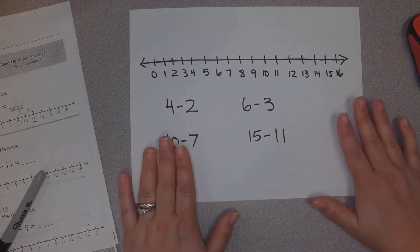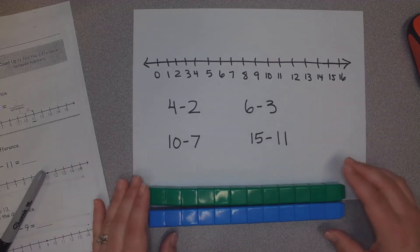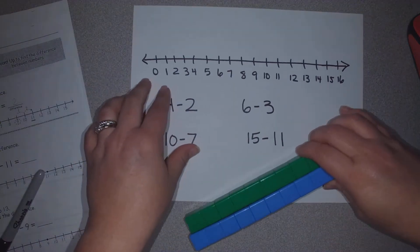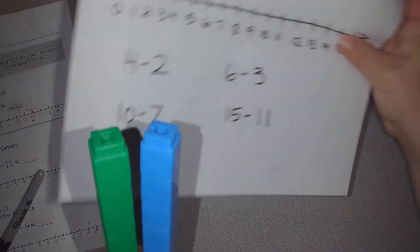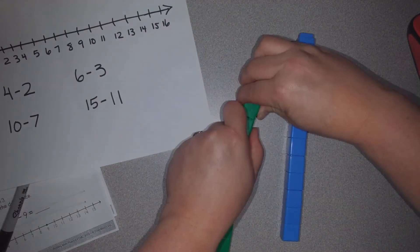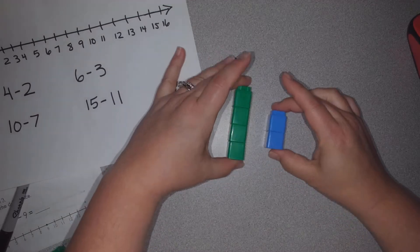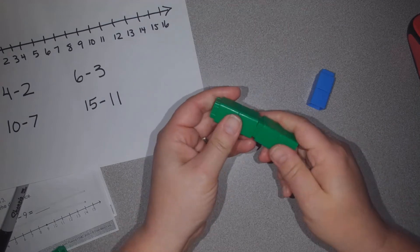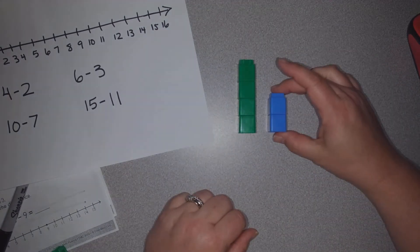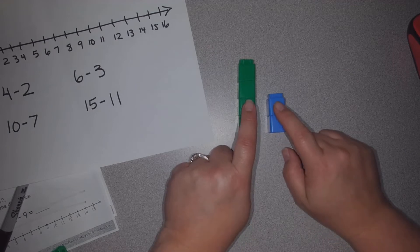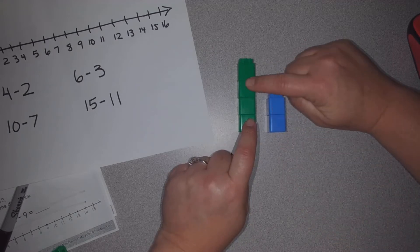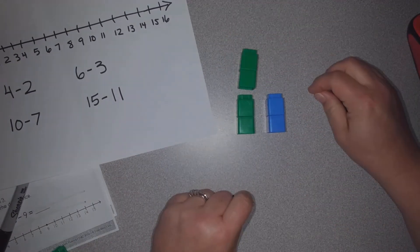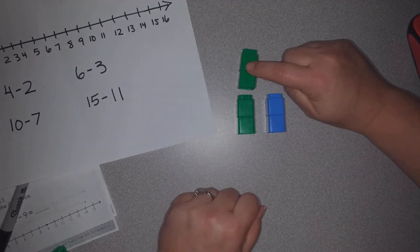I want to show you this concept with some blocks as well, so that you know what I mean by the difference. We're going to look at the first one, 4 minus 2. And my lights just went off in my classroom, but we can still do this. So if I have 4 and I have 2, 4 minus 2. Sometimes we can say, here's 4 and I'll just take away 2. But here's another way to look at it. Here's 4 and here's 2. Now this is the same, but this is different. The difference between 4 and 2 is 2, because this is the same, but this is different.